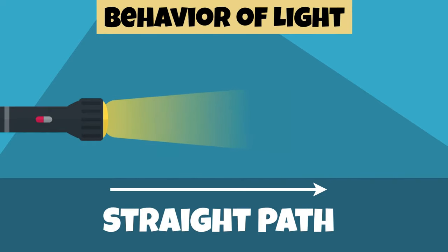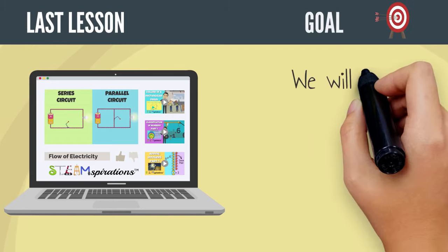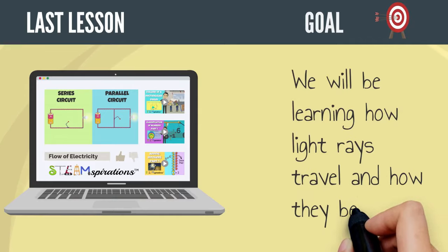Did you know that light travels in a straight path until it comes in contact with an object? Last lesson, we learned how electric energy flows in a circuit. In this video, we will be learning how light rays travel and how they behave.